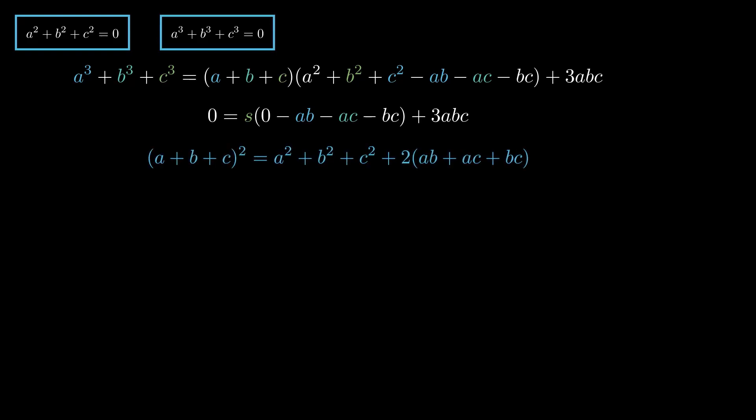To do that, we start with the square of A plus B plus C. Using the earlier result, we find AB plus AC plus BC equals S squared divided by two. From here, substituting this result into the pink box, we get ABC equals S cubed divided by six. Let's summarize these results and mark them with blue boxes for reference.